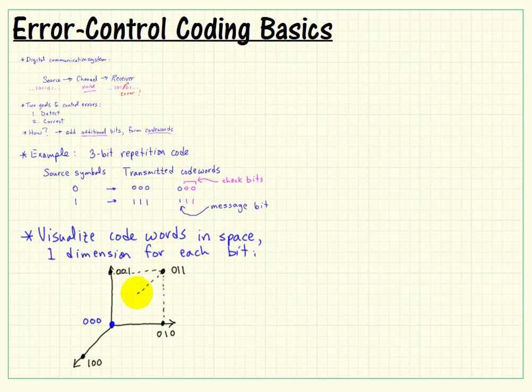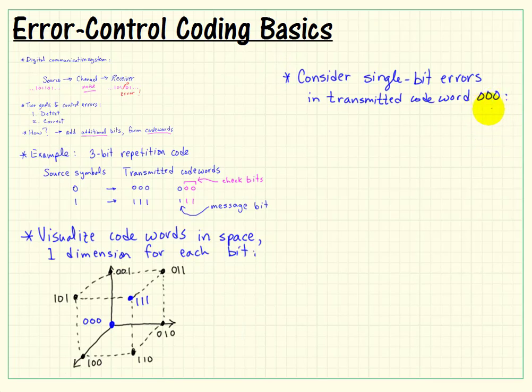If we move up, over, and then out of the page, that gives us the code word 111. Now that happens to be one of our valid code words for the 3-bit repetition code. So I'll color-code that blue. The blue corresponds to our valid code words. All the other points on that cube are invalid code words.